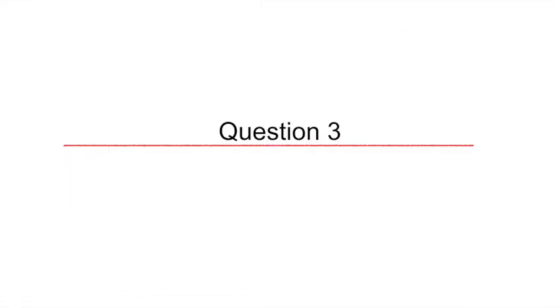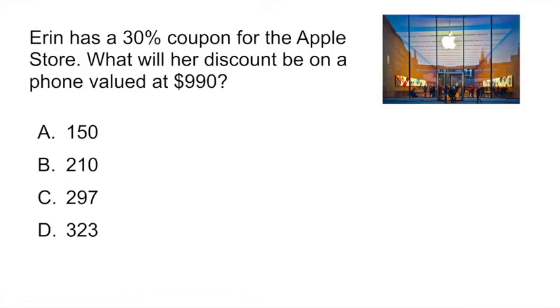Question three is a question about percentages. They're telling you that Erin has a 30% coupon for the Apple store and what will her discount be on a phone valued at $990. So the first thing to do is to just eyeball it and get an approximate answer. They're telling you 30%, so that's about a third, and the phone costs about $900, so it's going to be about a third cheaper, so that should be around 300 more or less.